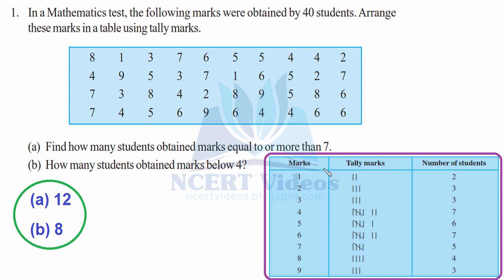For number 1, we put one tally mark and search for it again — we find it once more, giving us two. Similarly for 2, we search through the data: we find it in the first row marking once, second time marking again, third time marking again, and no more after that, so we conclude 2 appears three times.